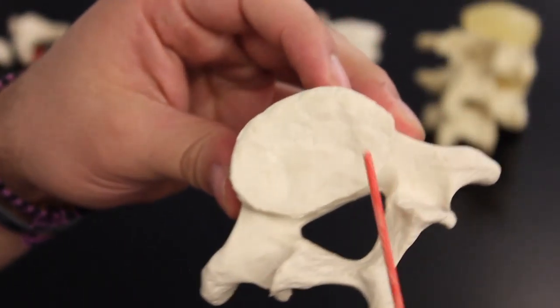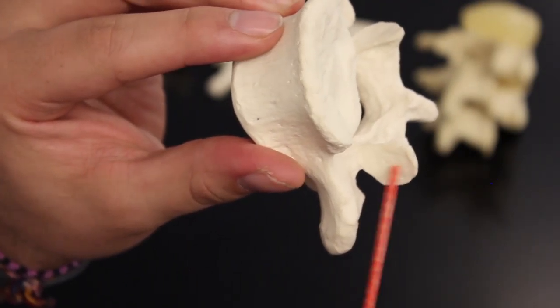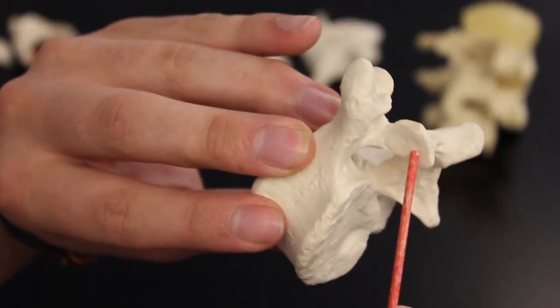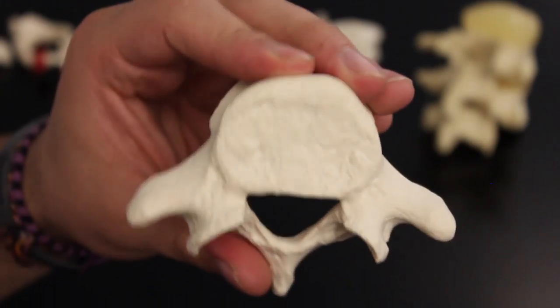And again I'm going to flip it over here so you can see a couple of parts. Again, that's the body, and right here is your inferior articulating process with facets and vertebral canal where the spinal cord runs through.